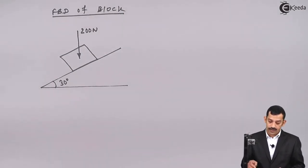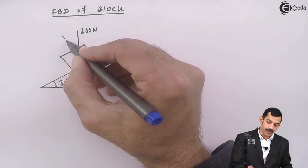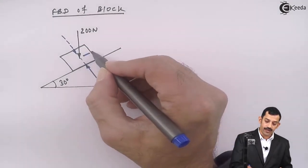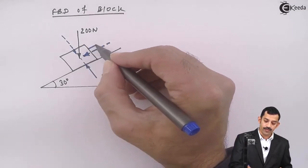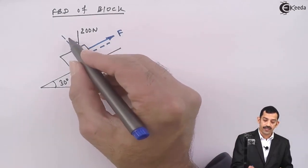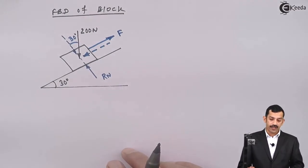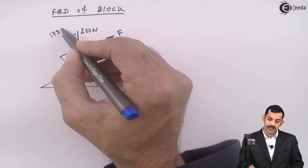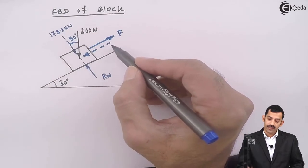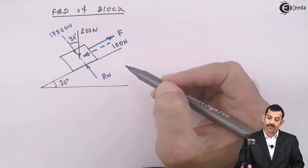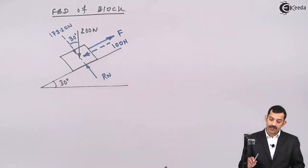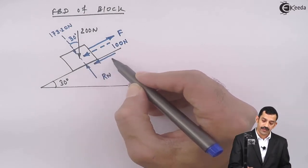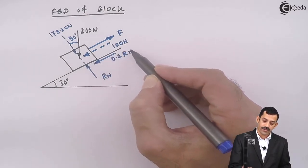Now, if we represent the components of weight: one component is perpendicular to the plane, which gives us the normal reaction Rn. The other component is along the plane. One force F is acting along the plane. This angle is the same as the inclination of the plane, which is 30 degrees. Resolving 200 Newton: we get 200 cos 30 = 173.20 Newton perpendicular to the plane, and 200 sin 30 = 100 Newton along the plane. Due to force F, the block accelerates upward along the plane, so frictional force acts in the downward direction. With μ = 0.2, frictional force = 0.2 Rn.